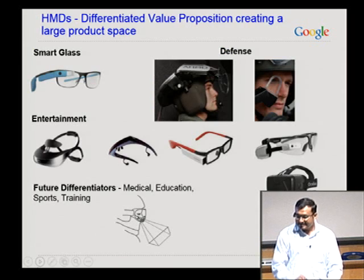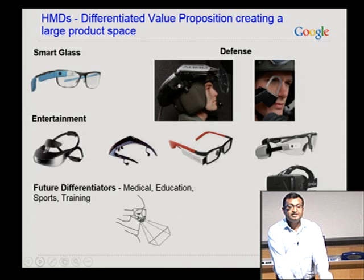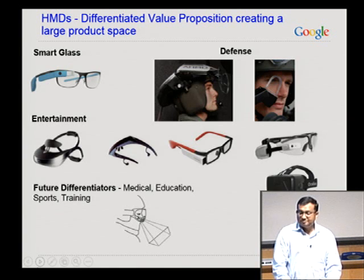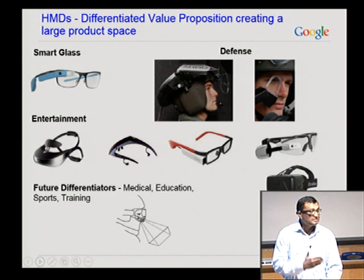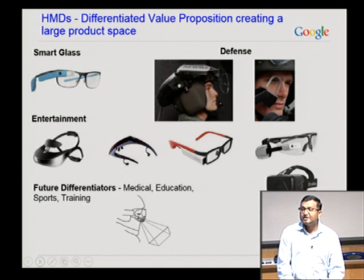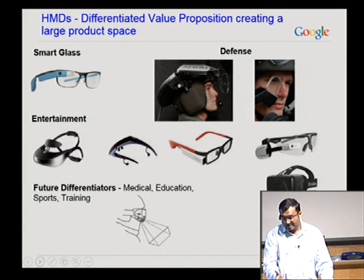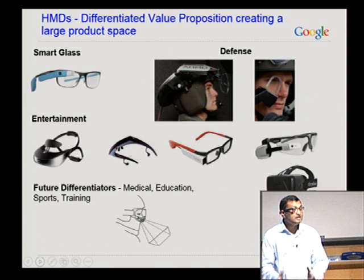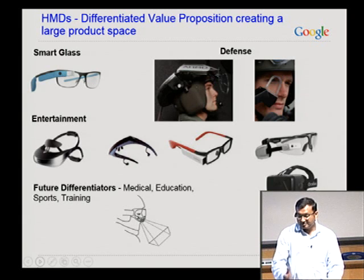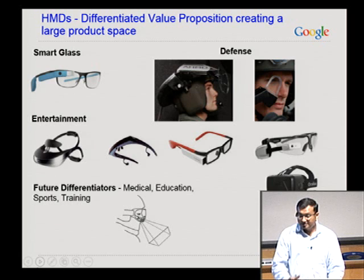Look at the field of head-mounted displays or near-eye displays — they've been around for about three decades. The biggest success has been achieved by defense; fighter pilots actually deploy them for tactical information. But now we have a differentiated product space: smart glasses, entertainment devices, virtual reality devices. The future differentiation could be with medical, education, sports, and training. So how does that affect the optical design?